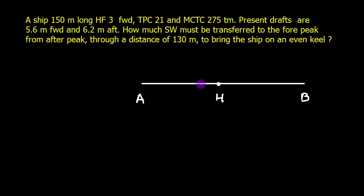Well, this is H. Now F, HF is given, which is 3 meters aft, so suppose this is F here, so HF is 3 meters aft. Now the present drafts are 5.6 and 6.2 meters. Let's ignore it at the moment.